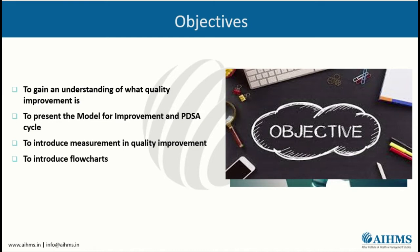Another objective is to introduce flowcharts. Flowcharts include the histogram, Pareto charts, pie charts, and so on. You can use these types of charts to measure quality improvement.